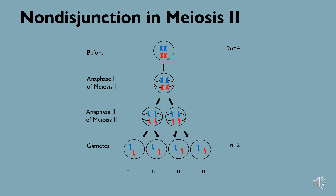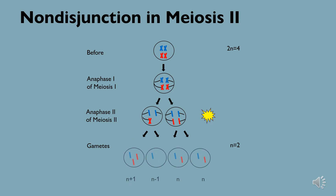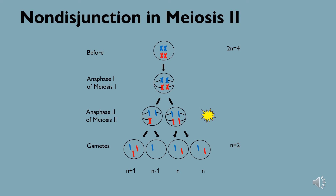Nondisjunctions can also occur in anaphase 2 of meiosis 2. Under normal cellular conditions, sister chromatids separate during this stage so that each resulting gamete has one copy of each chromosome. When nondisjunction occurs in anaphase 2, however, these sister chromatids fail to separate, resulting in daughter cells with abnormal chromosome counts.